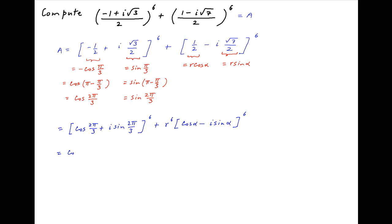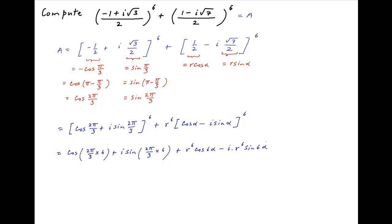Using De Moivre's theorem, this is equal to cos of 2pi upon 3 times 6 plus i times sin of 2pi upon 3 times 6, plus r raised to the power 6 multiplied by cos 6 alpha minus i times r raised to the power 6 times sin 6 alpha.